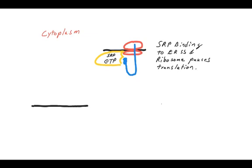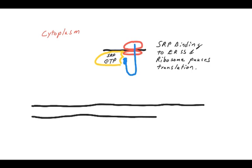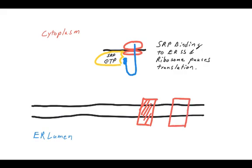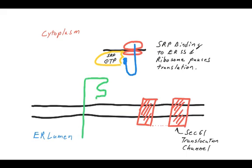Now once translation's been paused and you have this ribosome signal sequence SRP complex, it is now primed for interaction with the SRP receptor, which sits on the ER, and the SEC61 translocation channel, which is another transmembrane protein, and that's the actual gateway to get from the cytoplasm into the ER lumen.